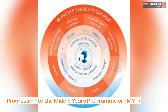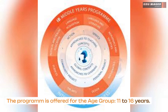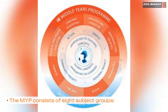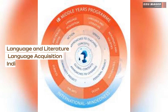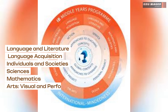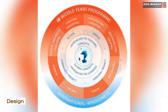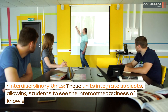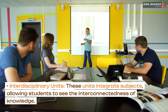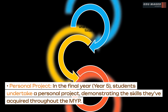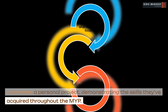Progressing to the Middle Years Programme, MYP, offered for ages 11 to 16 years. The MYP consists of eight subject groups: language and literature, language acquisition, individuals and societies, sciences, mathematics, arts (visual and performing), physical and health education, and design. Interdisciplinary units integrate subjects, allowing students to see the interconnectedness of knowledge. In the final year, year five, students undertake a personal project, demonstrating the skills they've acquired throughout the MYP.